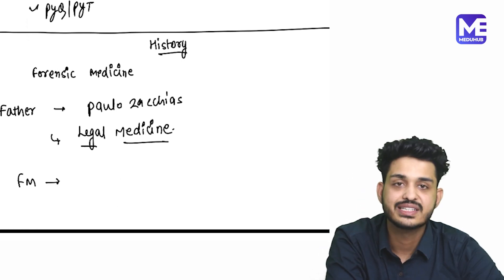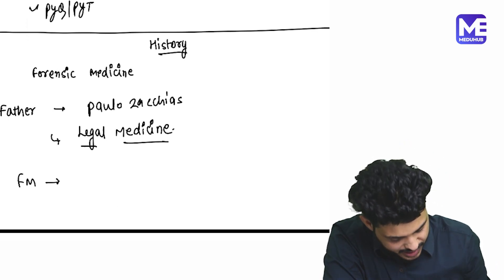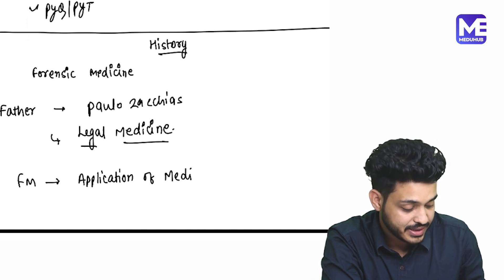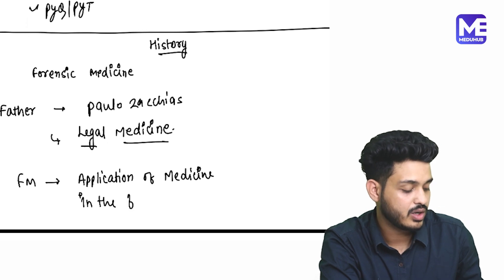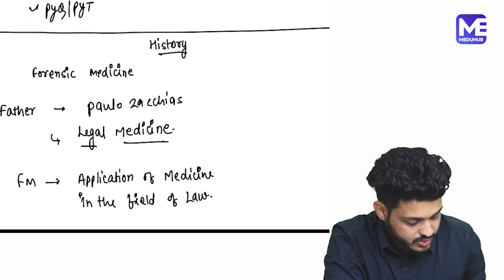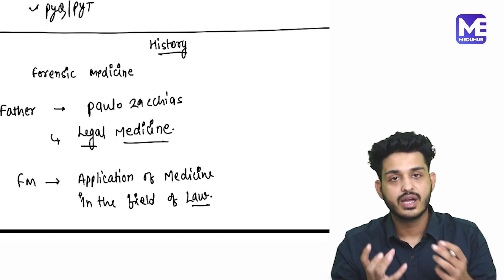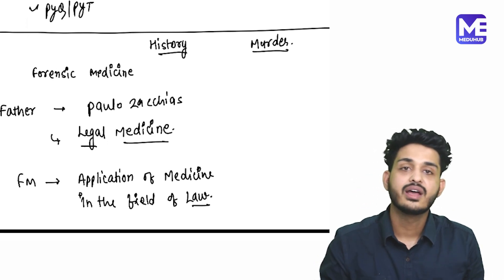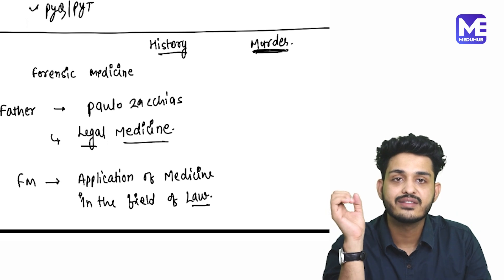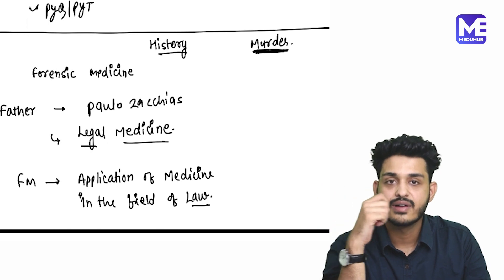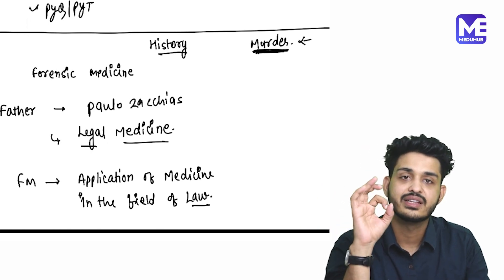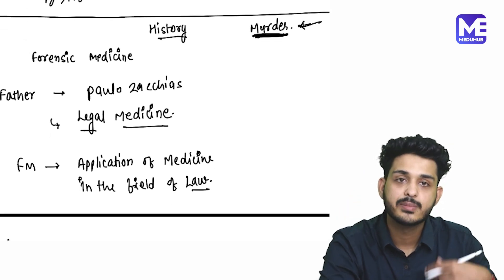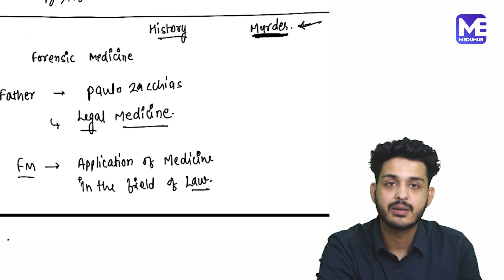What is the definition of forensic medicine? Forensic medicine is basically the application of medicine in the field of law — the application of medical knowledge in legal settings. For example, in a murder case, if the police or court needs to identify whether it was a murder or a suicide, the forensic expert can examine the evidence and, using medical knowledge, easily identify the cause. This helps in court procedures — that is why it is called forensic medicine.